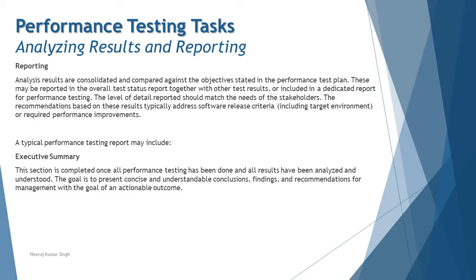A typical performance testing report can consist of several things. The first is an executive summary, which is completed once all performance testing has been done and all results have been analyzed. The goal is to present concise and understandable conclusions, findings, and recommendations for management with the goal of an actionable outcome — telling higher management the overall outcome of performance testing and what actionable steps can be taken.